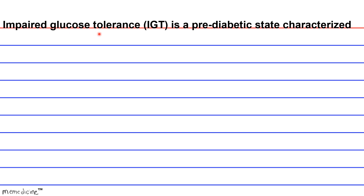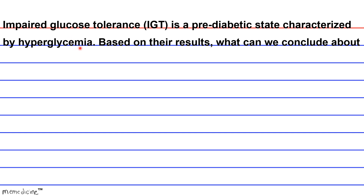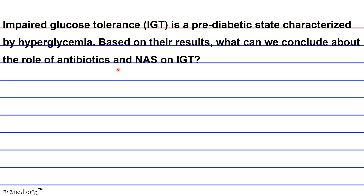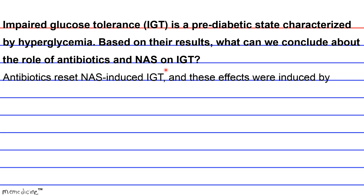Impaired glucose tolerance, IGT, is a prediabetic state characterized by hyperglycemia. Based on their results, what can we conclude about the role of antibiotics and NAS on IGT? Option A: Antibiotics reset NAS-induced IGT and these effects were induced by microbiota changes.